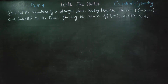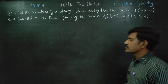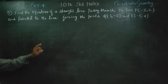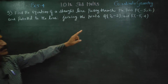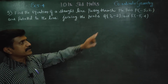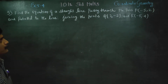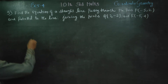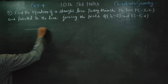Dear 10th standard students, in exercise number 5.4, sum number 5: find the equation of the straight line passing through the point minus 5, 2 and parallel to the line joining the points Q(3, minus 2) and R(minus 5, 4).